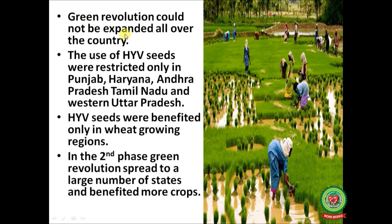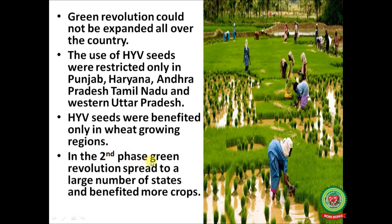Green Revolution could not be expanded all over the country. The use of HYV seeds was restricted only to Punjab, Haryana, Andhra Pradesh, Tamil Nadu, and Western Uttar Pradesh, and HYV seeds benefited only wheat-growing regions initially. In the second phase, the Green Revolution spread to a large number of states and benefited more crops.